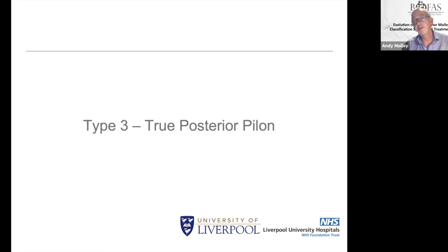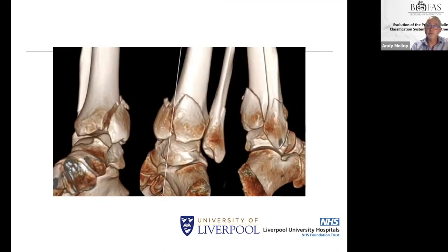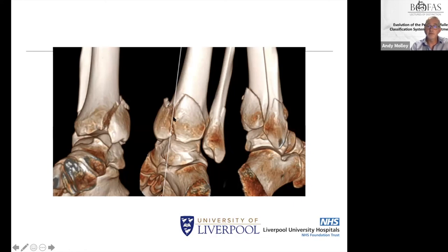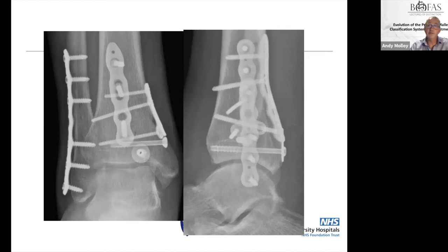For the type 3 true posterior pilons, fix them as you would an anterior pylon — anatomically — and you can always access these through a posteromedial incision. These tend to have more complicated medial malleolar fractures with significant comminution and vertical shear. Fix the posterior parts first, then the medial malleolus. For all types, you must fix the posterior part before the fibula, as once the fibula is fixed you cannot adequately assess posterior reduction.